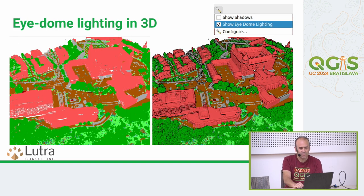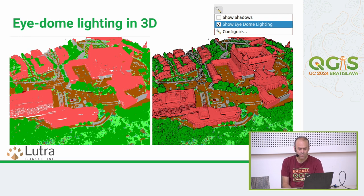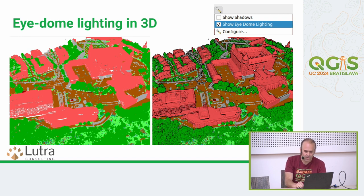One of the first things improved for point clouds was implementing the eye-dome lighting effect in 3D views, so that points can actually stand out based on their neighboring points. Points get shaded and you can actually distinguish slopes in the 3D views in point clouds.